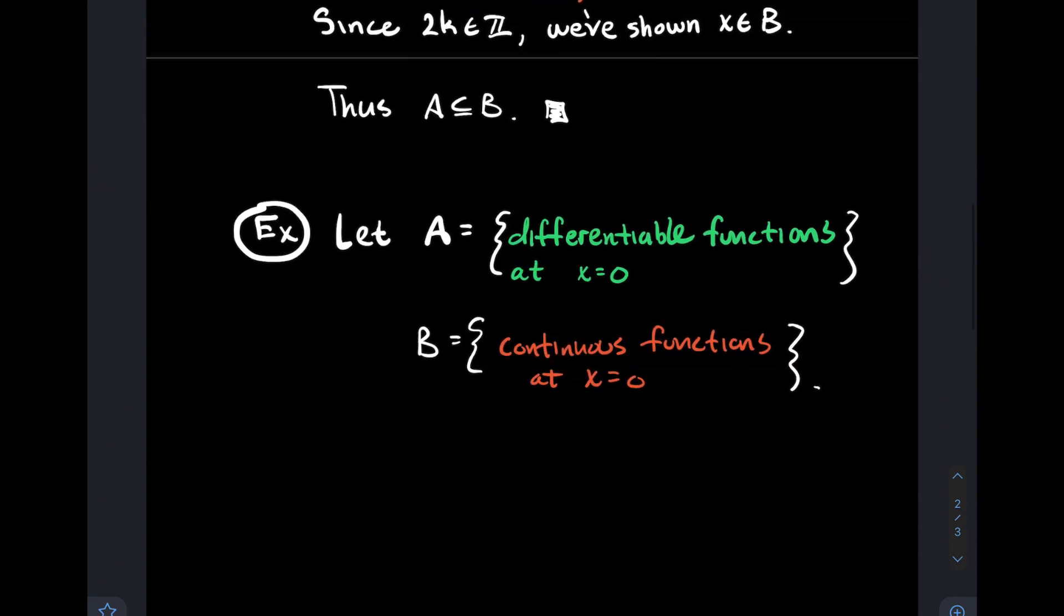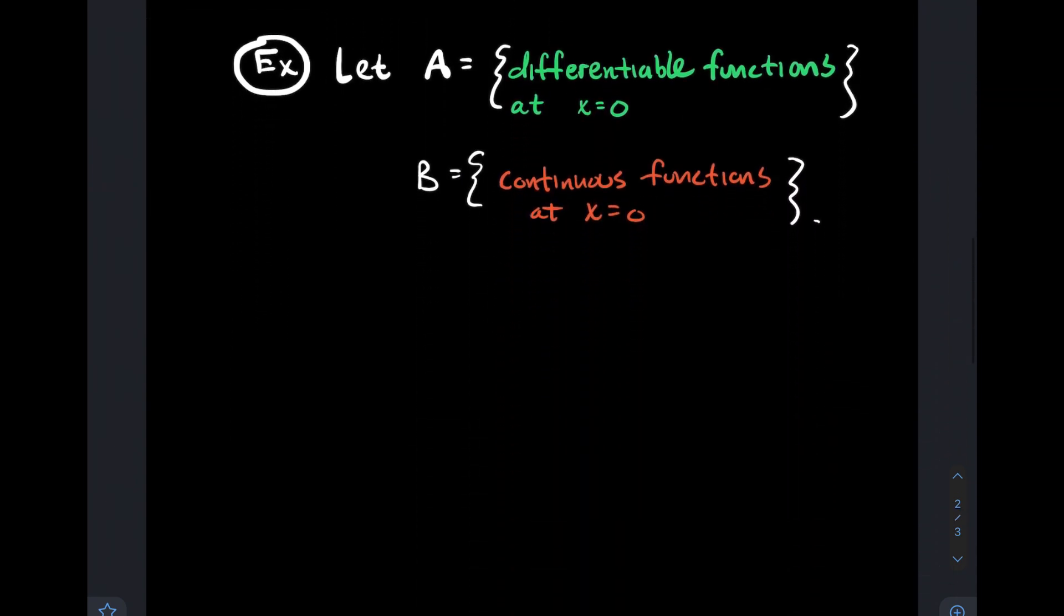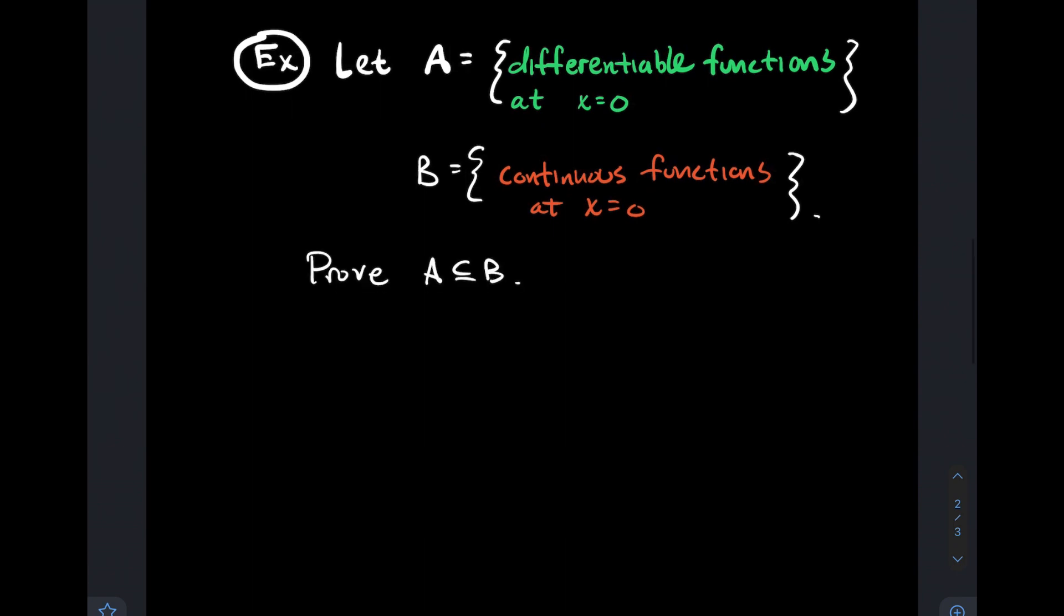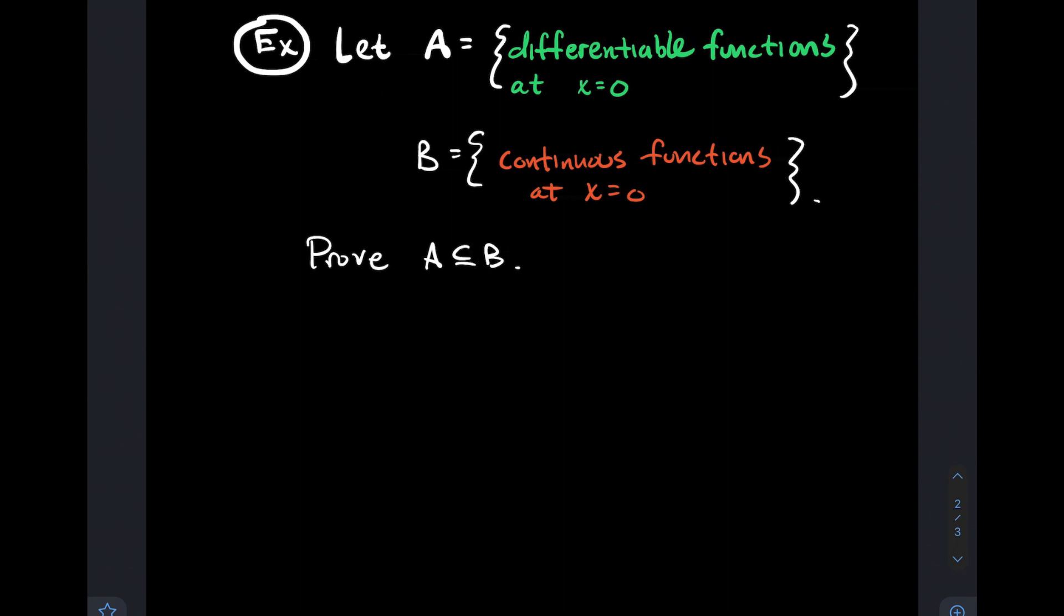Let's look at a more complicated one, where you have to dig a little bit for what are the conditions that even define these two sets. I'm being a little bit lazy here when I write down that A is the set of differentiable functions at 0, and B is the set of continuous functions at x equals 0. I want to prove that A is a subset of B.